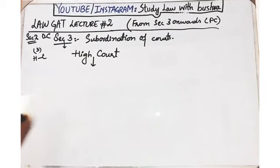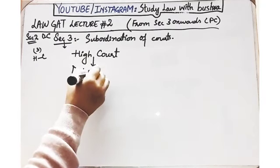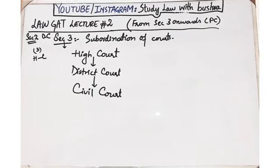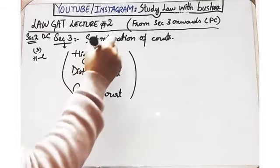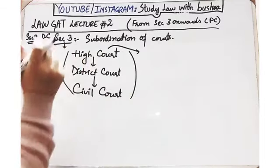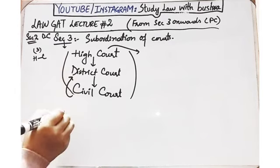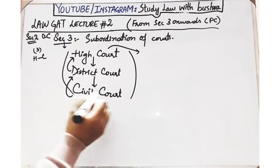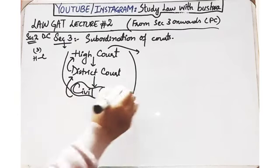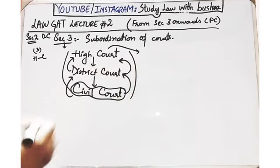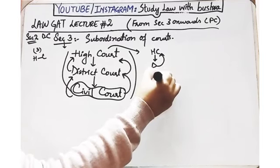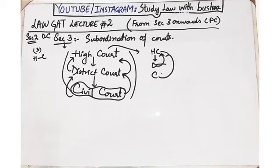At the provincial level, the highest forum is the High Court. Below the High Court at the district level is the District Court, and subordinate to the District Court are the Civil Courts. So this is the subordination hierarchy you should remember: High Court → District Court → Civil Courts.